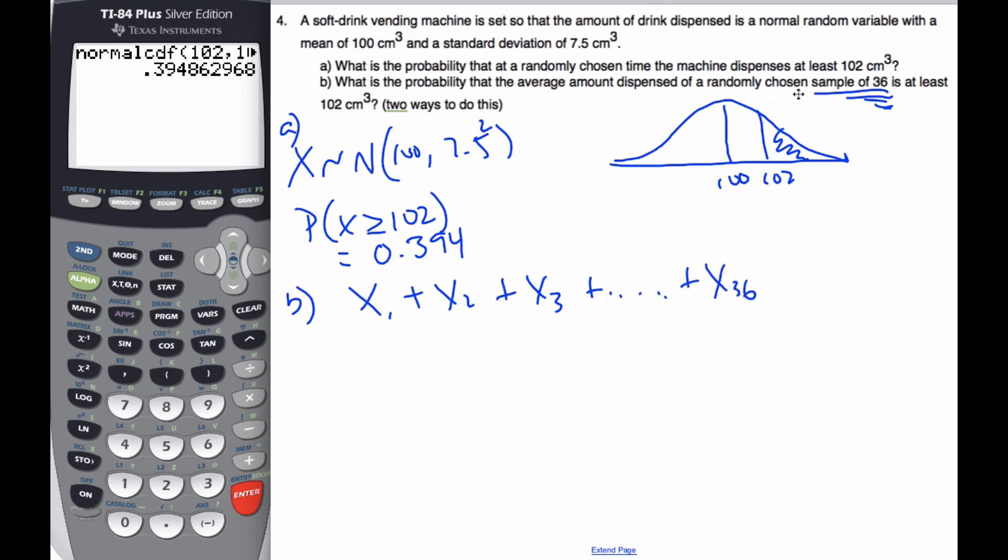And if I want to find the expected sum of all those, I know that each of these is going to be 100. And so my expected sum, if I call this equal to T for the total, total will be normal with a sum of 3600, 100 plus 100 plus 100, 36 times.